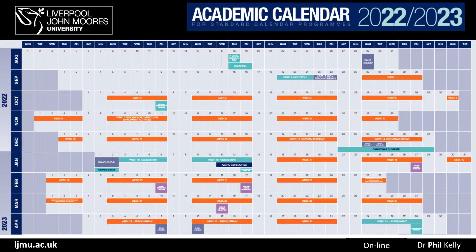If you're on the one-year program, then after April you'll start your dissertation. If you're on the two-year program, then after April you'll come back in September of the following year to do your advanced practice module. The calendar also shows key dates: when the Christmas break is, when the Easter break is, and when assessments are typically due — but I'll talk more about this shortly.